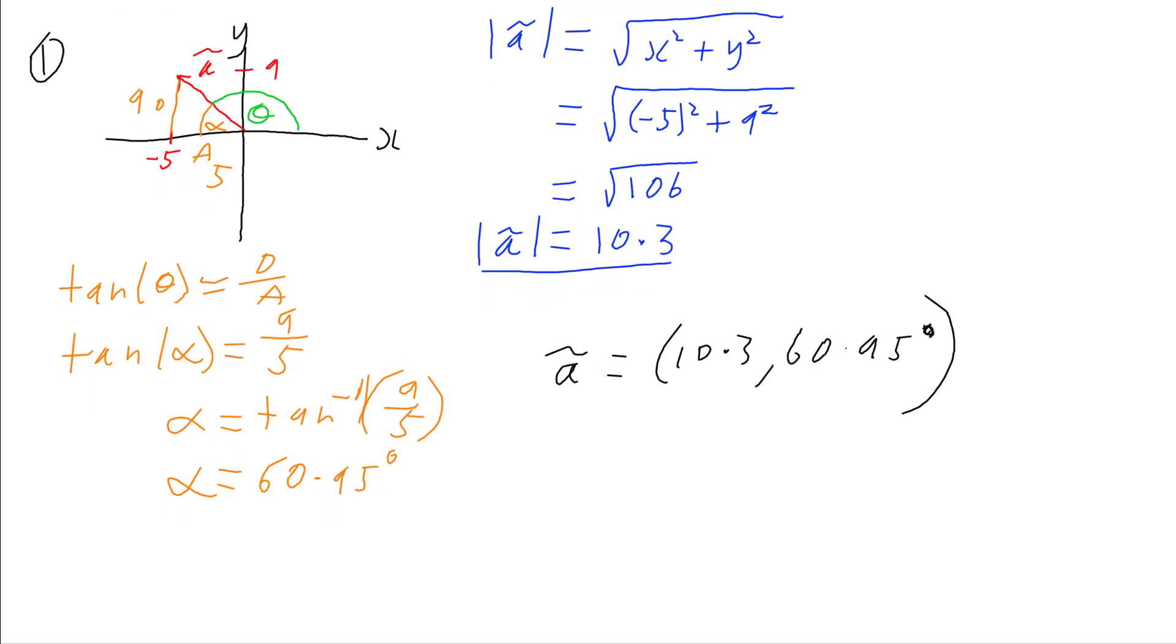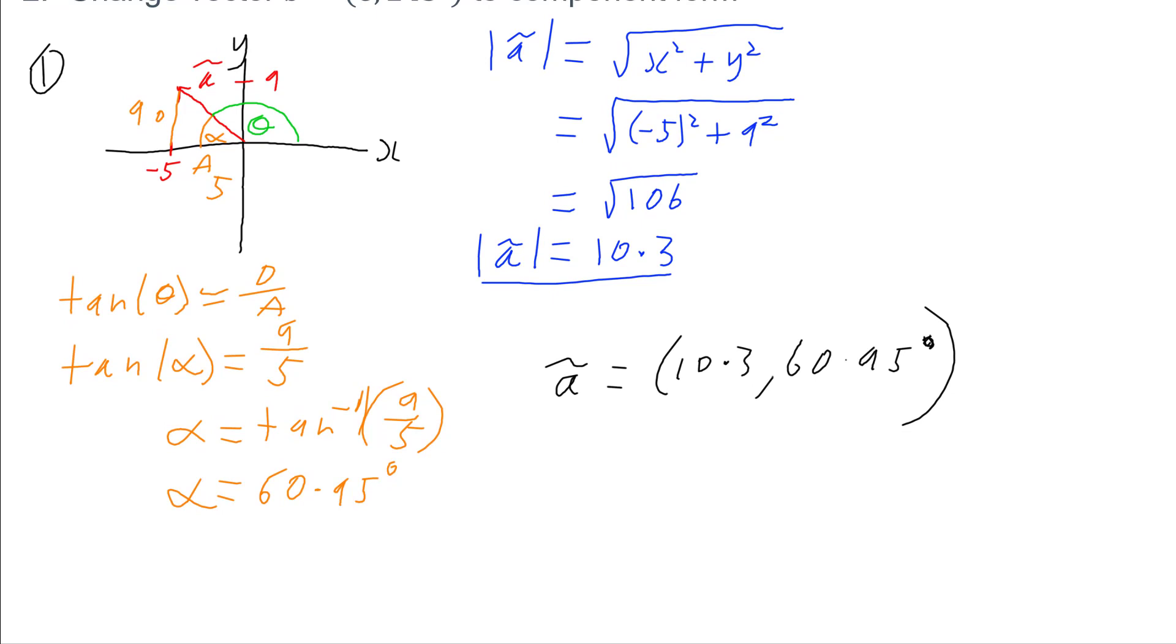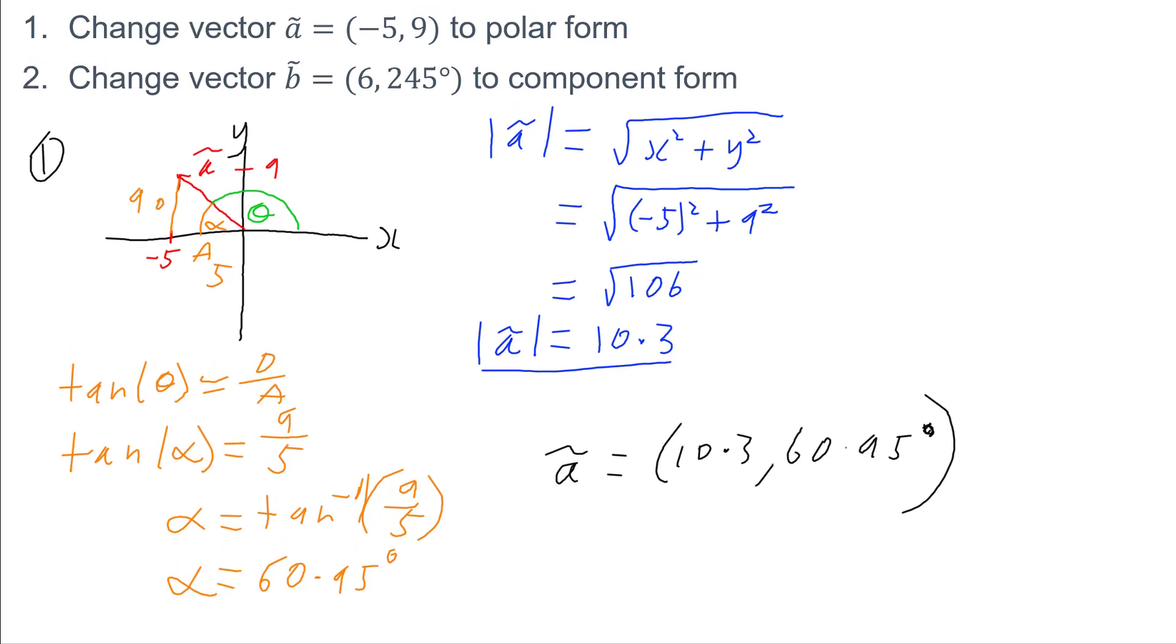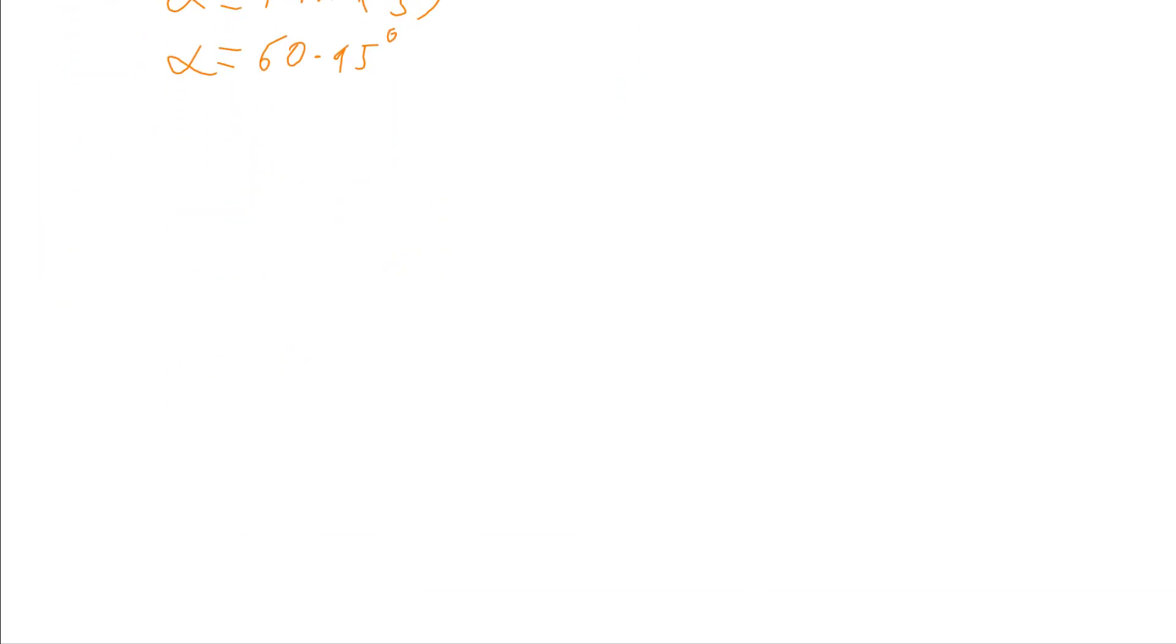So now having a look at number 2, vector B of magnitude 6, angle 245 degrees. If I go and draw that on the Cartesian plane, vector B is an angle of 245 degrees with 90, 180, 245 will be out this way somewhere. And it's got a magnitude of 6. And that gives us vector B.